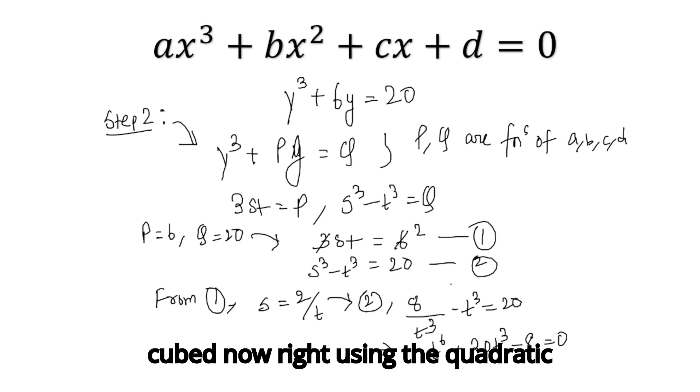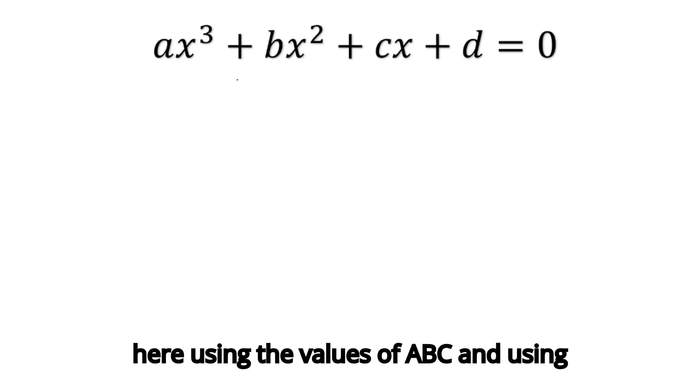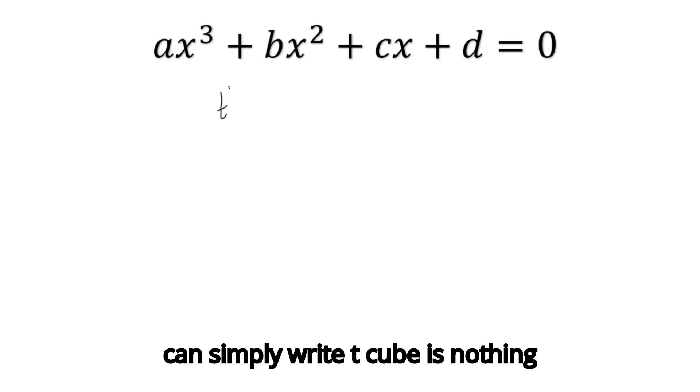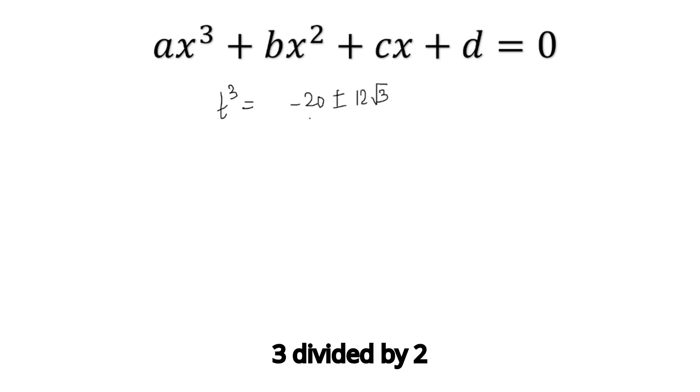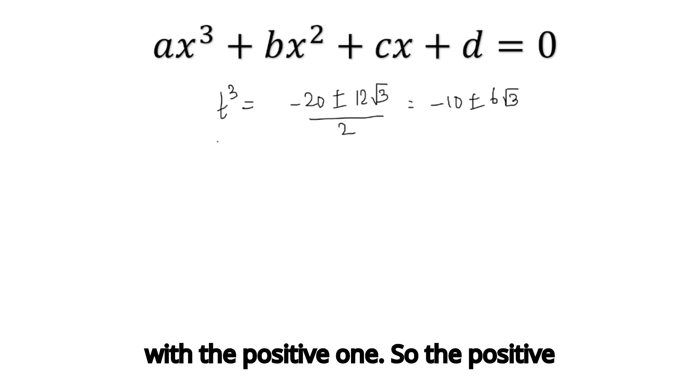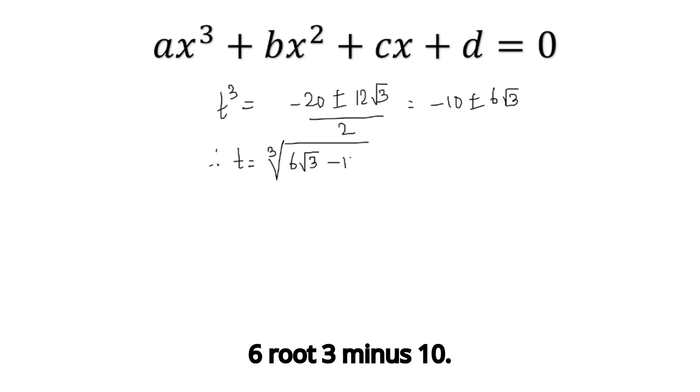You can solve for t³ using the quadratic formula. The value is t³ = (-20 ± √(400+32))/2 = (-20 ± 12√3)/2, which simplifies to -10 ± 6√3. Let's take the positive value, so t = ∛(6√3 - 10). From this t, we can also find s. When you find s³, you will see that s³ = 6√3 + 10.